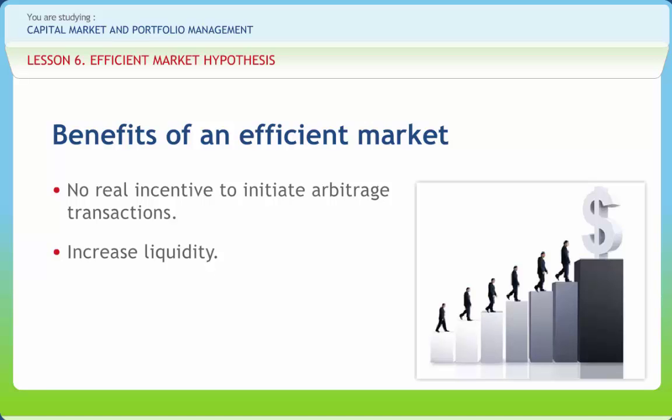If only the market for television sets were as efficient as the market for stocks, a lot less comparison shopping would be needed. Arbitragers provide liquidity to investors who need to sell or buy securities for purposes other than betting on changes in expected returns.